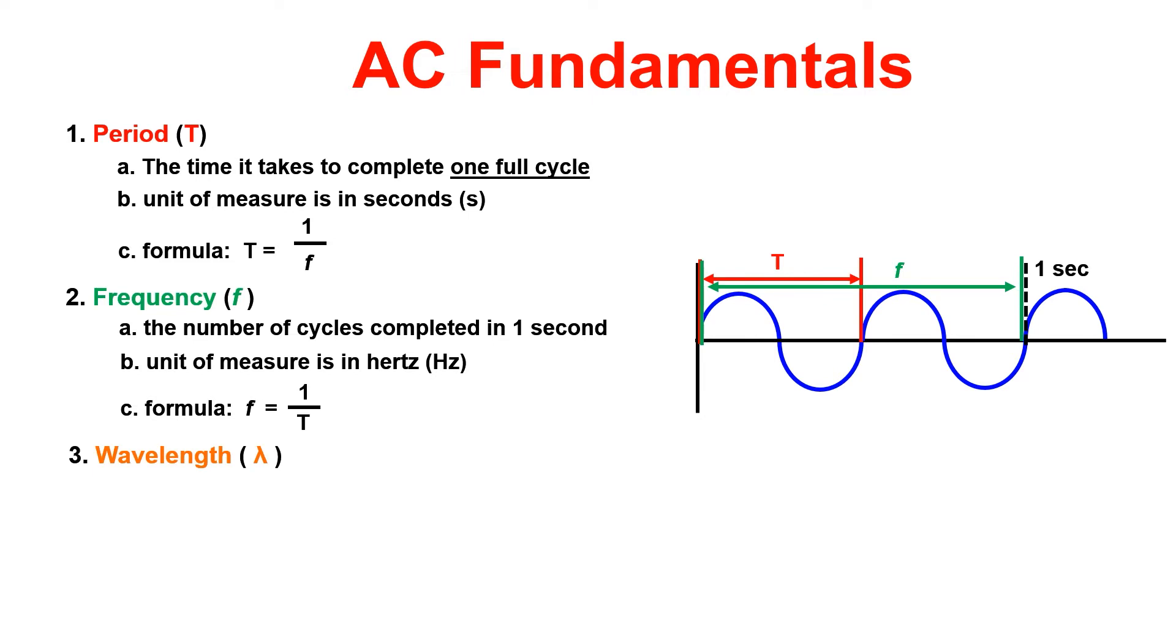Wavelength is the distance from the beginning to end of one complete cycle. The unit of measure is in meters and to calculate wavelength, the formula can be located in table 6 of your formula sheet. 300 meg divided by the frequency will give us the distance or wavelength of the waveform.